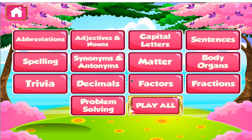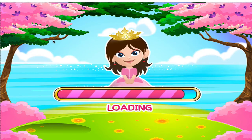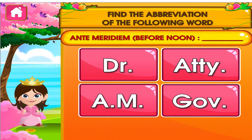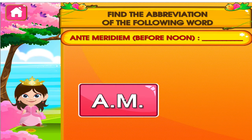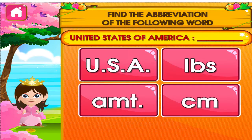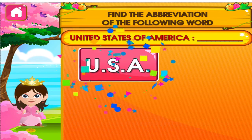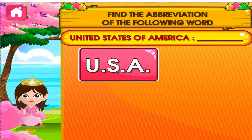Choose the activity you want to play. Abbreviation. Tap the correct answer. You're good at this. Tap the correct answer. Great job! You got it right!